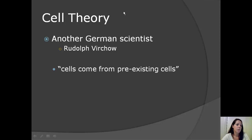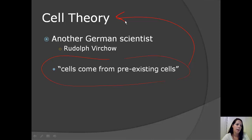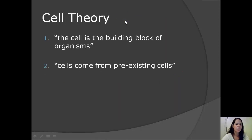Rudolf Virchow was a German doctor, biologist, anthropologist, and pathologist. He is credited in history with determining that cells come from pre-existing cells — that was his main contribution to the scientific community. However, some believe that Virchow may have originally taken this cell theory idea from another scientist, Robert Remack, but taken credit as if it were his own work. In summary, the two main ideas of the cell theory are: number one, the cell is the building block of organisms, and number two, cells come from pre-existing cells.